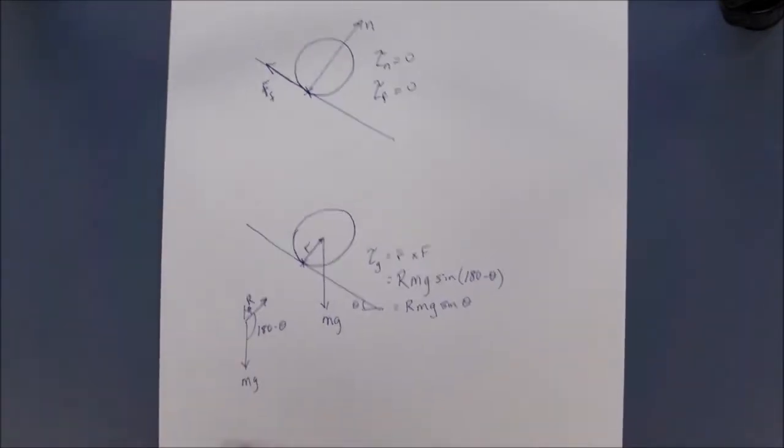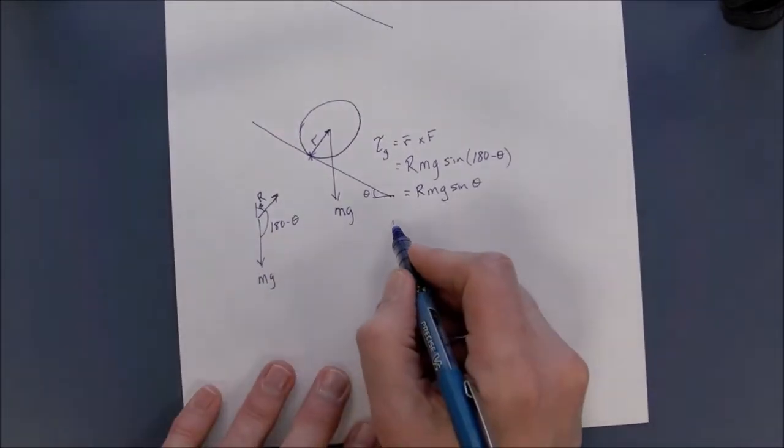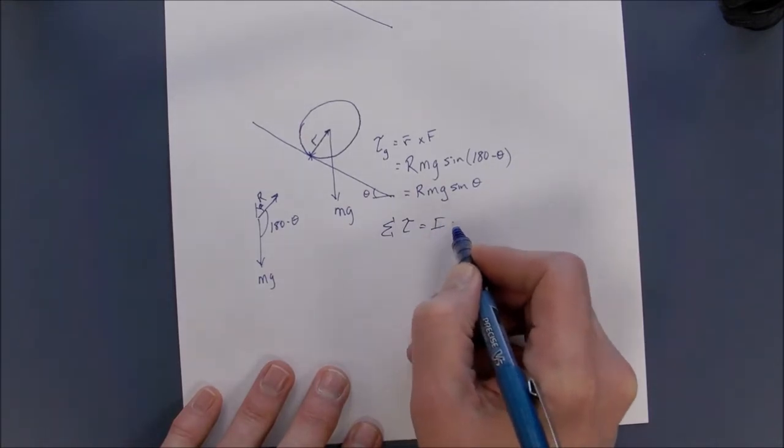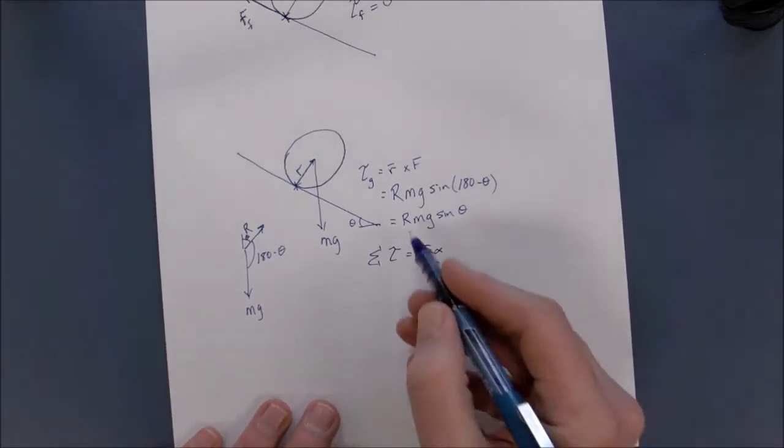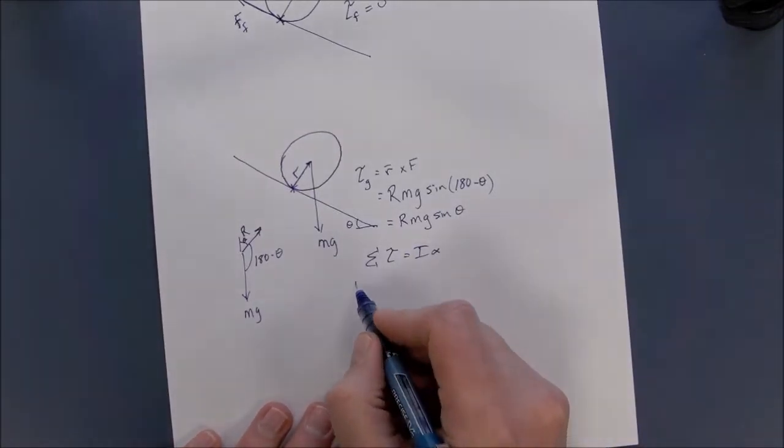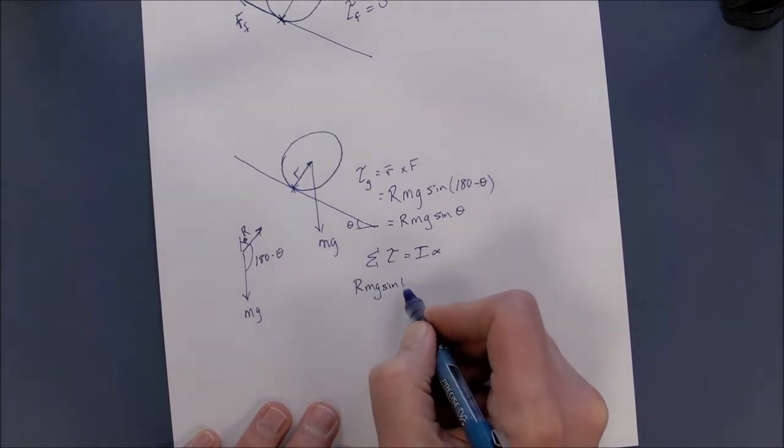So then if we apply Newton's second law here to rotation, some of the torques is equal to I alpha. Of course, there's only one torque acting. And that's R, mg, sine theta that we just showed.